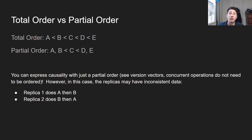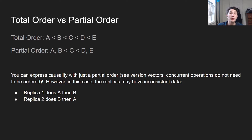Similarly, if D and E were concurrent, they might have depended on C but didn't know about each other. So you can express causality with just a partial order. Something like version vectors, which I've covered in my multi-leader replication video, construct a partial order — some version vectors can't be compared, telling you two operations are concurrent, and you might create siblings or merge them. But in a partial order, not all operations have to be compared, whereas in a total order, even concurrent operations still have to be put in order somehow.